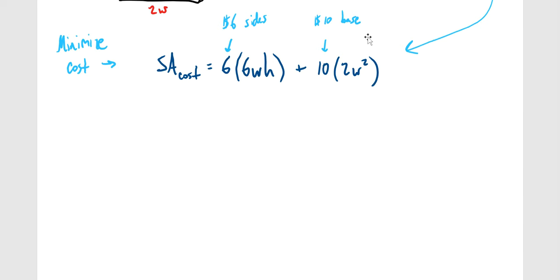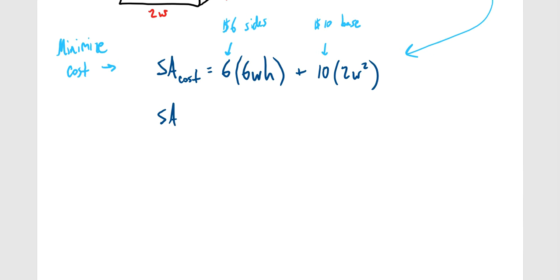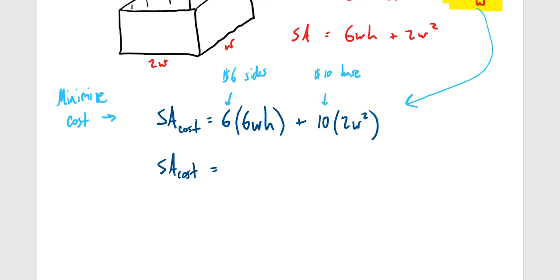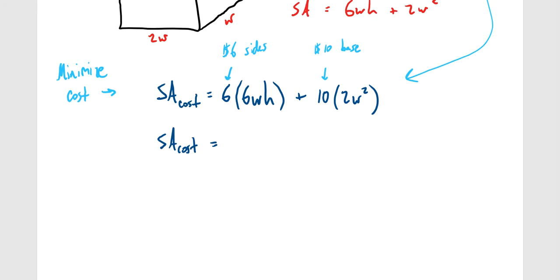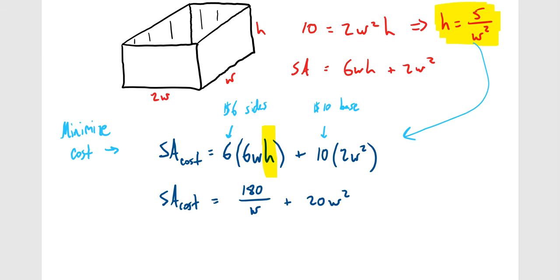Plugging H = 5/W² into the cost formula and simplifying, the first term — 6 × 6WH — simplifies to 180/W, and the second term — 10 × 2W² — gives 20W². So SA_cost = 180/W + 20W².